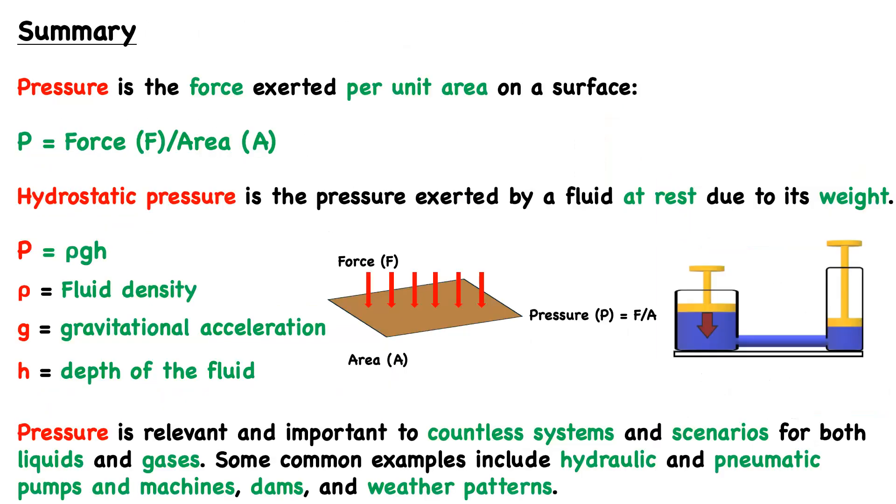Let's summarize some key information from this lesson. First, pressure is the force exerted per unit area on a surface, and the formula is as follows: we can simply take the applied force F divided by the area A. Again, it is defined as the force exerted per unit area, so the equation for pressure is simply force divided by area.